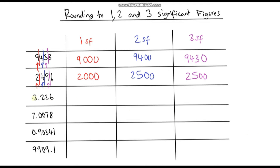Let's look at number 3: 3.226. The 3 is our first significant figure. We look at the 2 to its right — that is less than 5, so this stays at 3. For two significant figures, the second significant figure is the 2 after the decimal. We look at the next 2 — that is less than 5, so this stays at 3.2. For three significant figures, our third significant figure is the second 2. We look at the 6 next to it — that's bigger than 5, so this digit gets rounded up to a 3, giving 3.23.